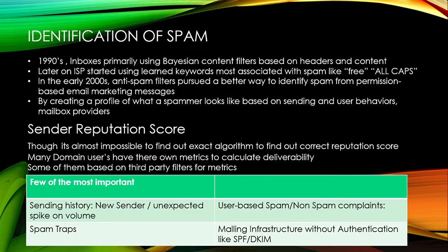Key factors include sending history, whether you are a new sender, and unexpected volume spikes. For example, if a sender you regularly receive email from suddenly sends a massive volume of emails in May or June, that spike signals something suspicious and needs to be analyzed. Another factor is user-based spam complaints — in Gmail, users can categorize a message as spam or non-spam. When a user explicitly says they are not interested in these emails, they are categorized as spam, which Gmail, Hotmail, and Yahoo use directly in their filtering algorithms.